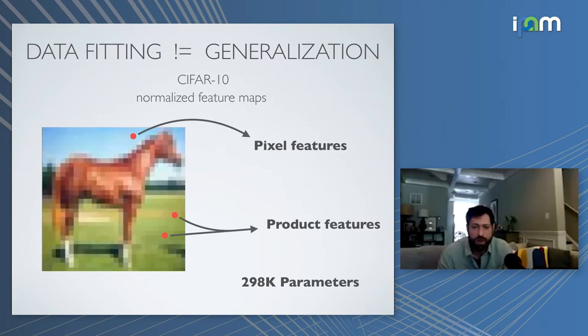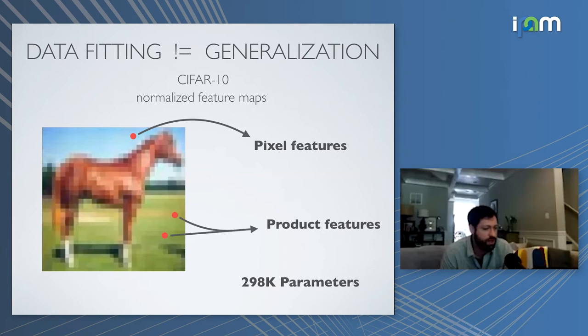Let's look more deeply at generalization. Comparing a neural network to a linear classifier, a naive idea is that data fitting equals generalization — if you fit your training data, you should do well on test data. For some model classes that's true to an extent, but for neural networks this is true to an amazing and mind-blowing extent.